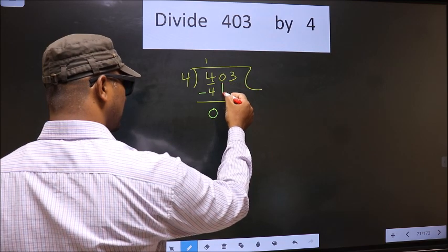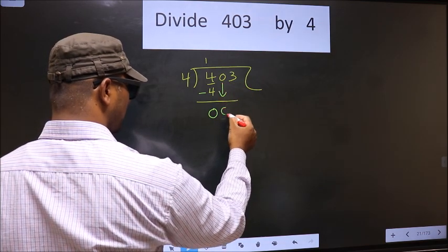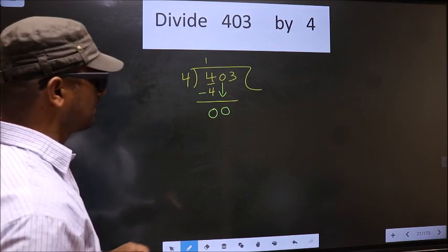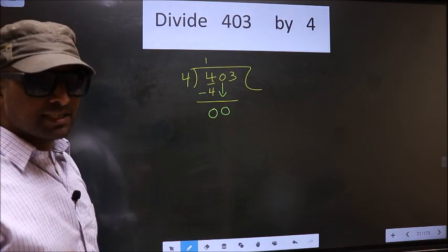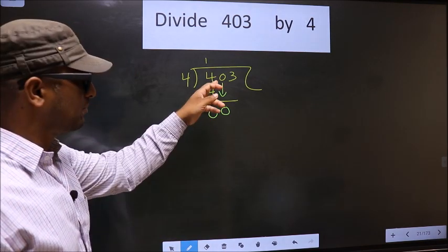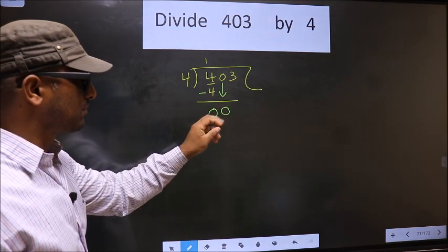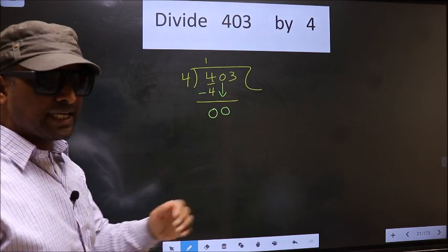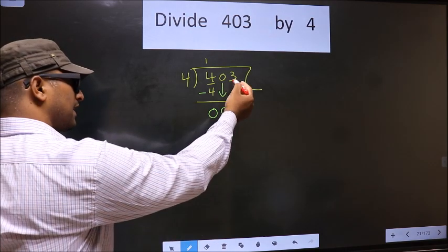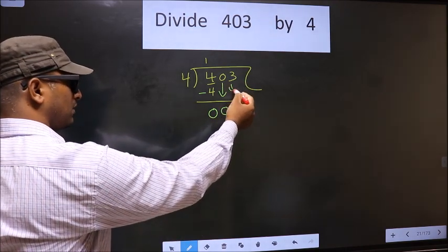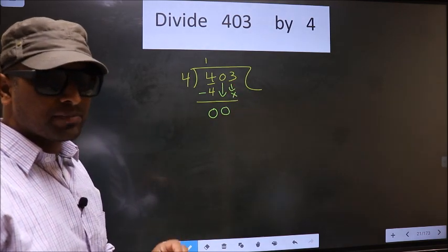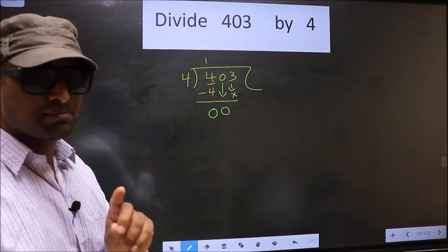Now, you bring the beside number down that is 0. Now, this is where the mistake happens. And what is that mistake? See, you brought the number down 0. 0 is smaller than 4. So, what many do is they bring the other number also down which is wrong. At a time, you can bring only one number down.